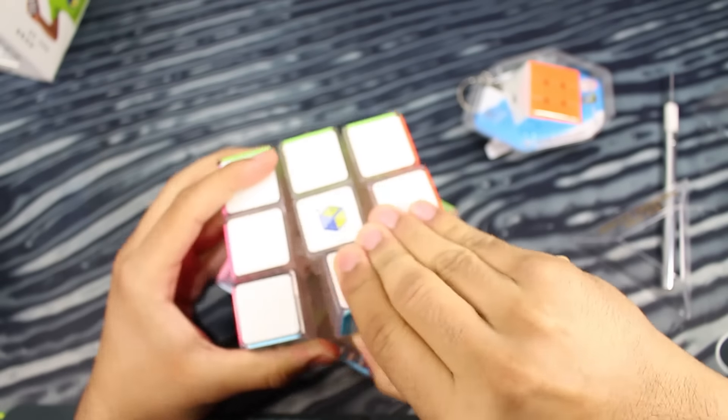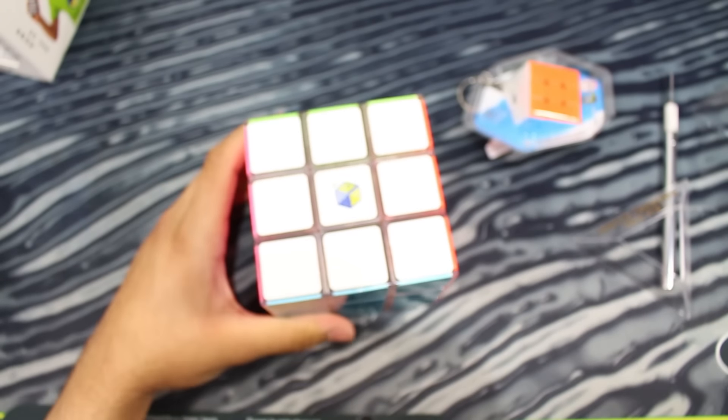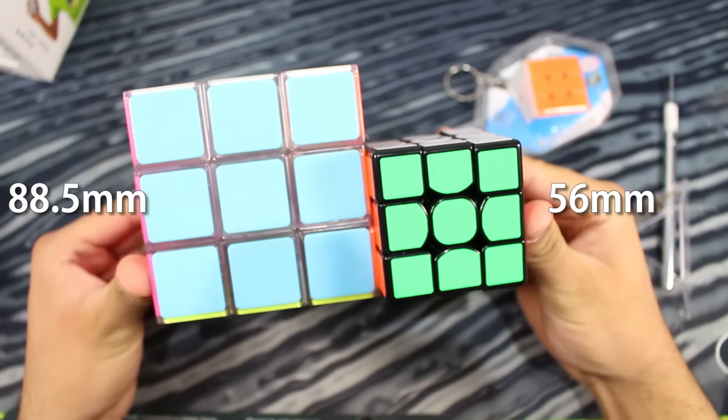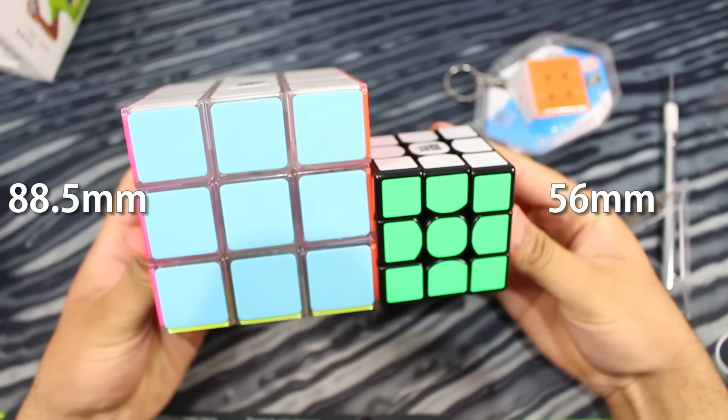Well, actually, let's take a look at this. Actually, let's just compare it to a regular 3x3 first. So this is a Weilong GTS. As you can tell, it's quite large.